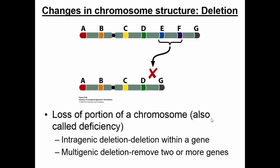Whenever we talk about these different types of changes, I want to first focus on one of these chromosomes and tell you exactly what the different parts are. Whenever you see a letter with a shaded region next to it — like A, B, C, D — those are different genes. Whenever you see a gray area between those two genes, it's an intergenic region, so it's a non-coding region. And whenever you see a little tiny sphere where the chromosome is indented, this is a centromere.